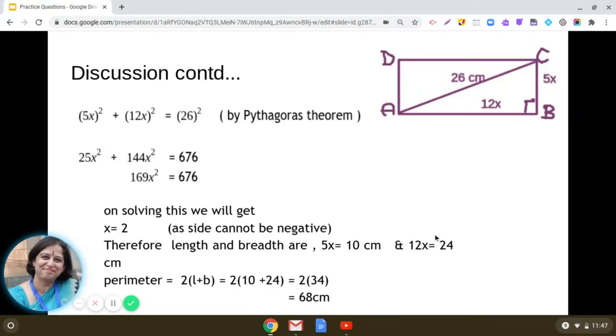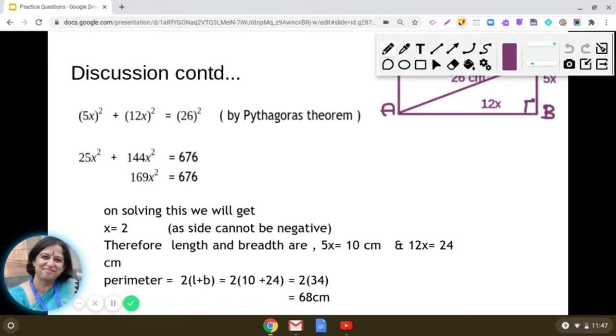and we say that the square of the hypotenuse is equal to the sum of the squares of the remaining two sides. So we get 5x whole square plus 12x whole square equals 26 square.